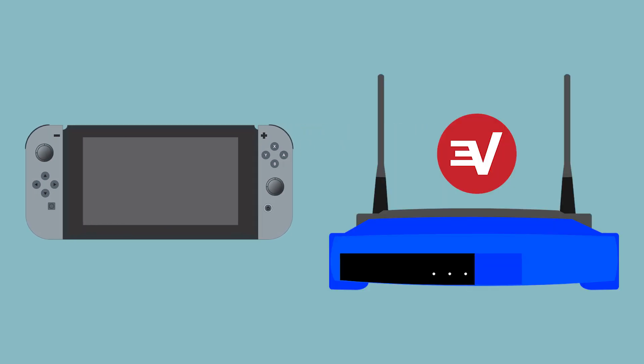If you want to use VPN on your Switch, consider connecting it to the Internet through a router running the ExpressVPN app for routers. The setup process has four steps.